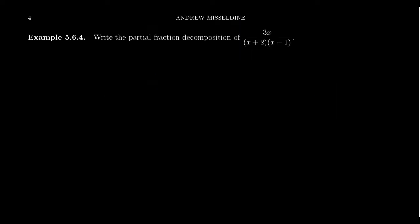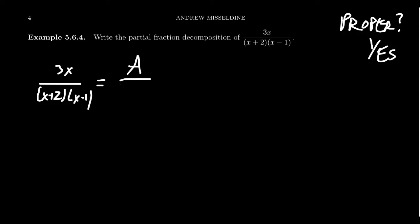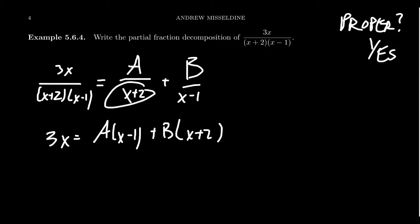Let's look at another example, going a bit quicker this time. We have 3x over (x plus 2)(x minus 1). Is this proper? Yes — the top is linear, the denominator is quadratic. The denominator is already factored, so we move immediately to the template: A over (x plus 2) plus B over (x minus 1). Clearing the denominator gives us: 3x equals A times (x minus 1) plus B times (x plus 2).